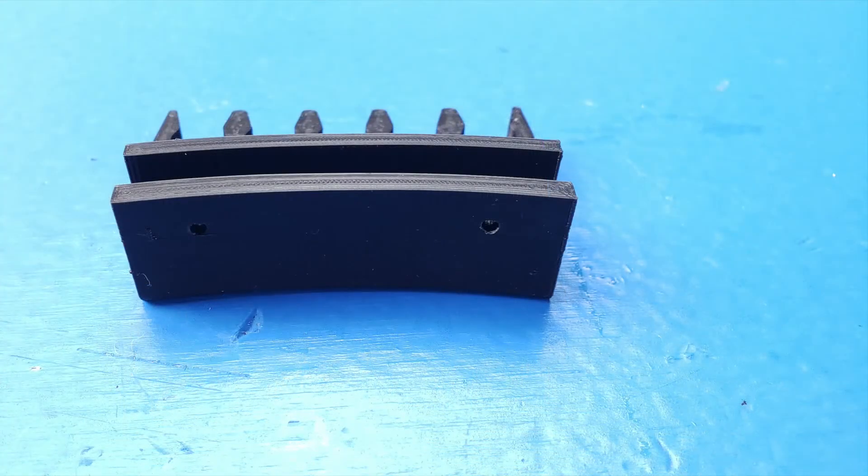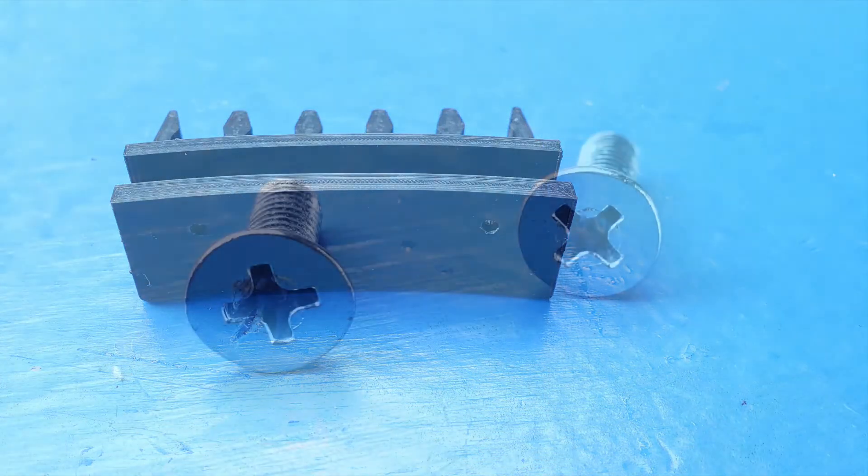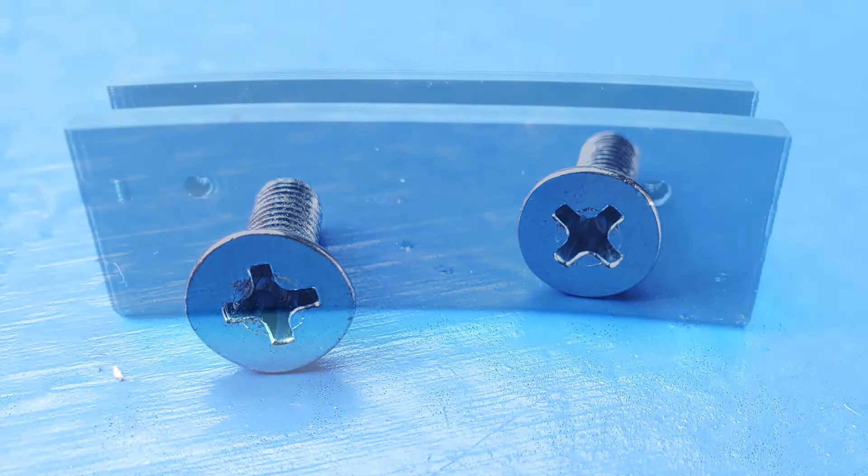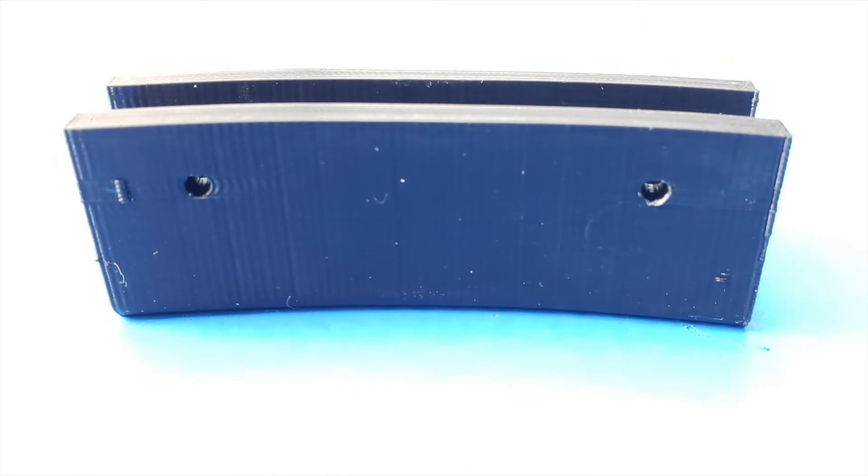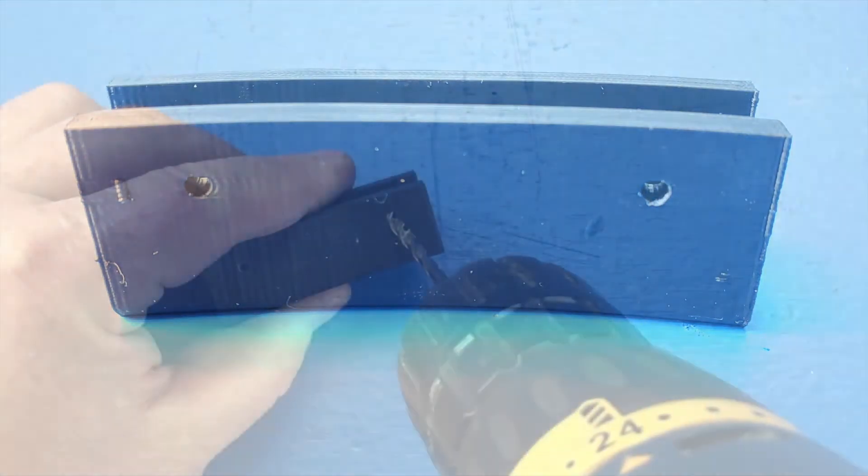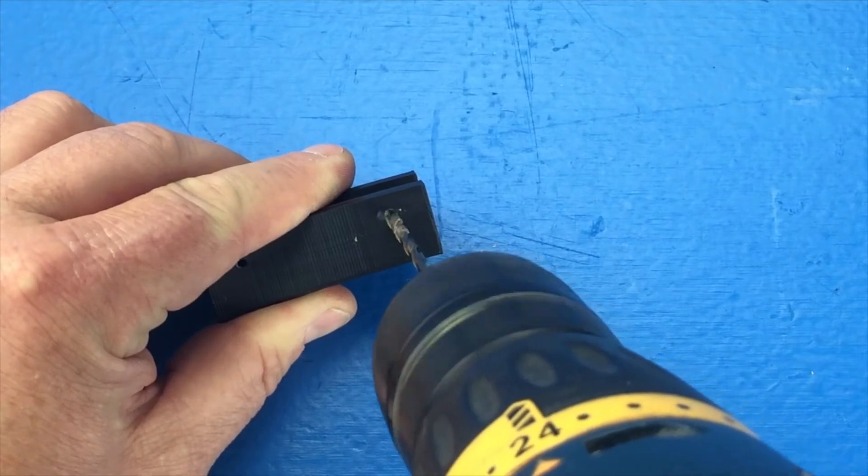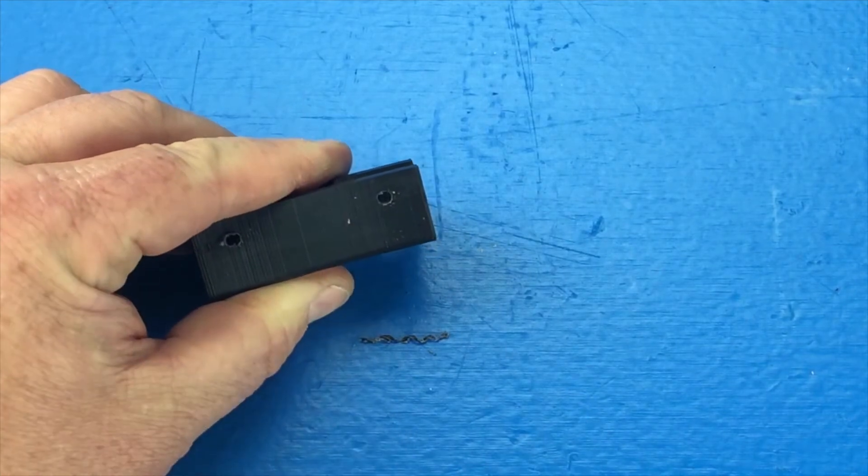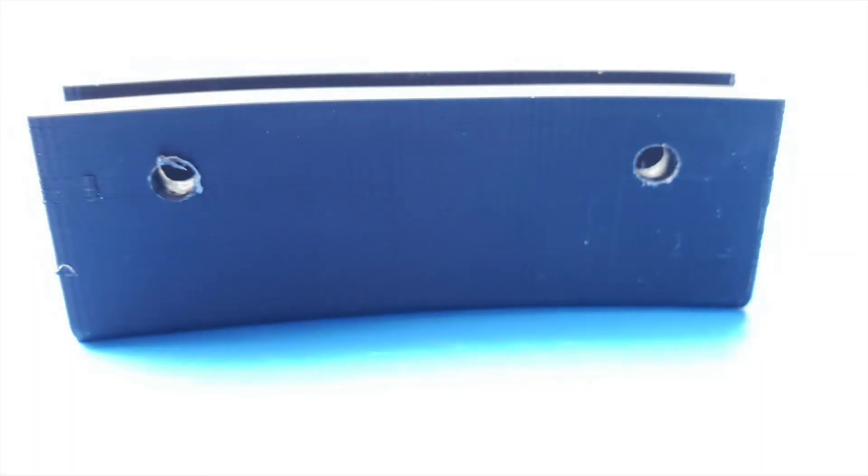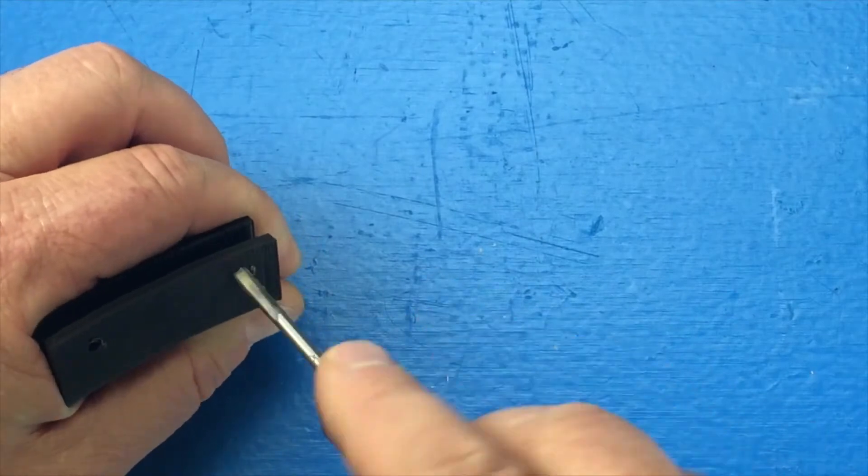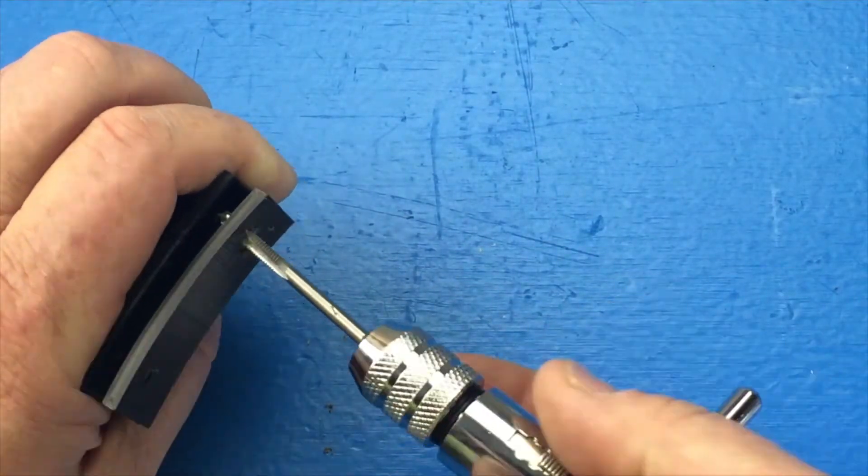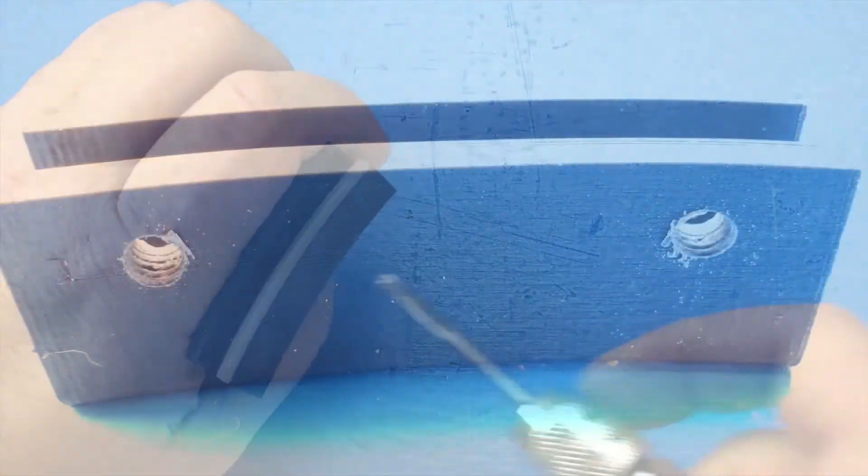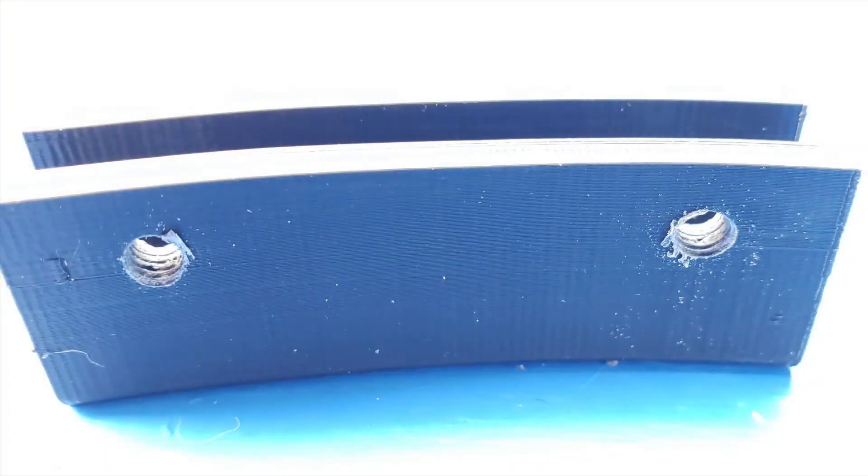The holes on the back can be tapped for M3 screws, however M4 screws are available at my local hardware store so I decided to use them. This means I'm going to need to drill the holes a little bit larger so that I can tap them for the M4 screws. Now with the holes drilled out I can tap it with my M4 tap. This part is now ready to be mounted onto the shell feeder.